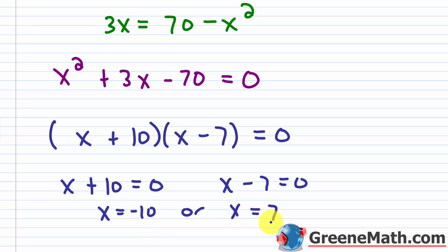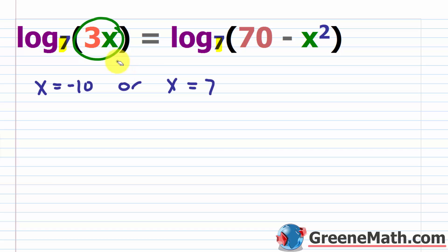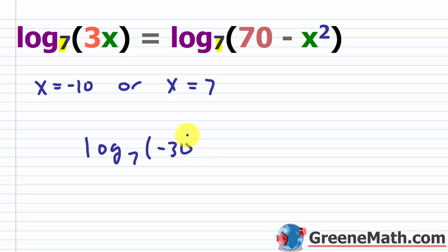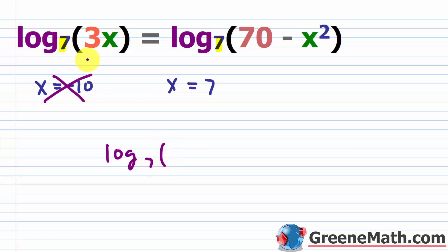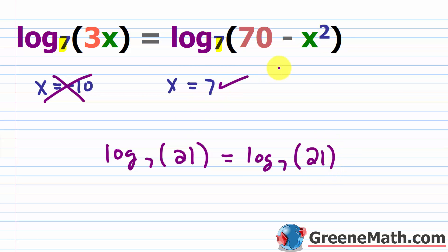Here's an example where we have a domain violation and have to reject one solution. For x equals negative 10: 3 times negative 10 is negative 30, so we'd have log base 7 of negative 30, which is undefined. Once you see that it fails, just reject the solution and move on. Now trying x equals 7: log base 7 of 3 times 7 is log base 7 of 21, and on the other side, 7 squared is 49, and 70 minus 49 is 21 as well. So this one does work out as a solution.